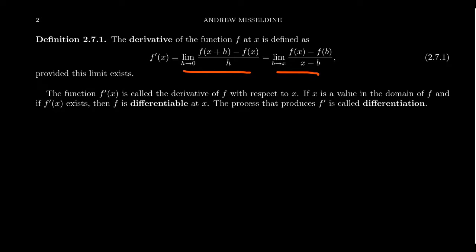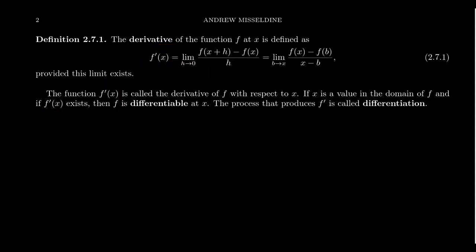It's often the case that the limit does not exist, and since the derivative is defined upon a limit, if that limit doesn't exist, the derivative doesn't exist either. So we might say a function is not differentiable. If the derivative f prime of x exists at x, we say f is differentiable at x. We'll see examples in the next lecture of why a function might not be differentiable at a point.